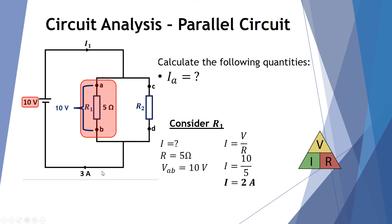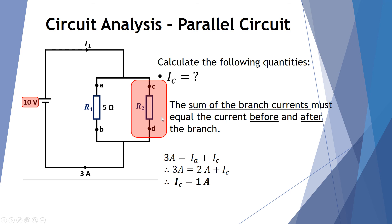Now, if there are 2 amps in the left-hand branch and the two branches join to give 3 amps, there must be 1 amp in the right-hand branch. The 3 amps before or after the branch equals the current in the first branch plus the current in the second. The first branch has 2 amps, therefore the current in the second branch must be 1 amp.